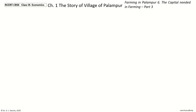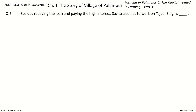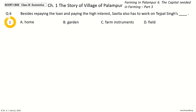Question 6. Besides repaying the loan and paying the high interest, Savita also has to work on Tejpal Singh's Dash. The options are: Home, Garden, Farm Instruments, Field. And the answer is Field.